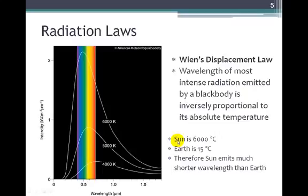So something like the sun, which is 6,000 degrees Celsius, compared to the Earth, which is 15 degrees Celsius on average, that means that the sun emits energy at a much shorter wavelength than does the Earth. So the hotter the object, the shorter the wavelength of maximum emission. That's Wien's displacement law.